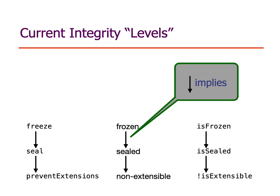These integrity levels were introduced in order to support high-integrity programming, and they've served that function rather well, but there are still some weaknesses we'd like to address. On the left of this diagram we have the functions that bring about the integrity levels, on the right we have the predicates that test an integrity level, and the middle is the name of the integrity levels as states an object can be in.